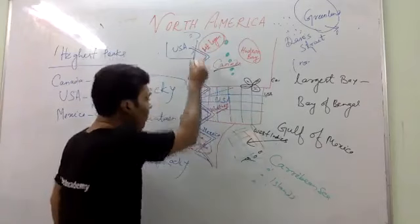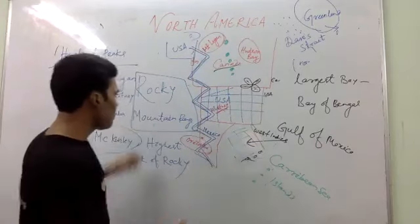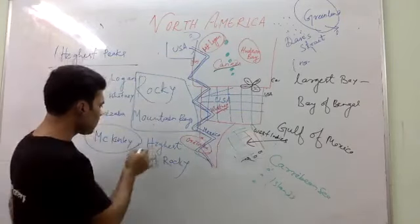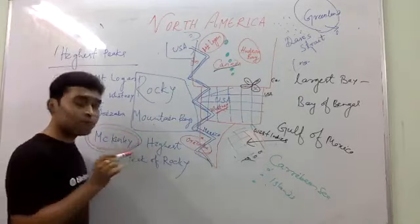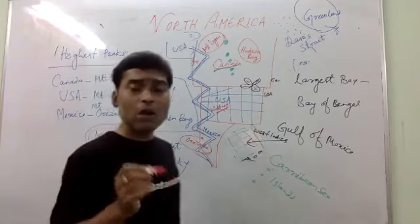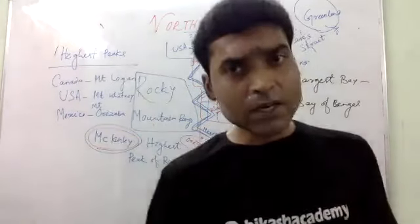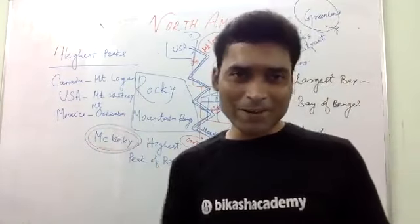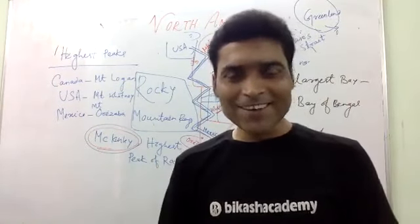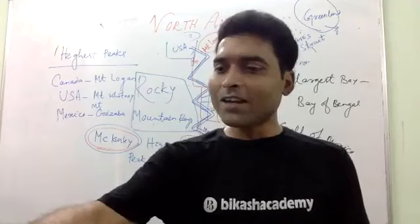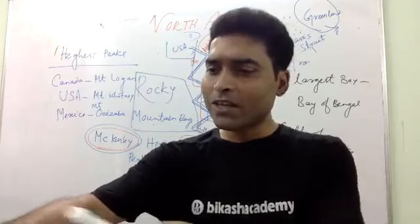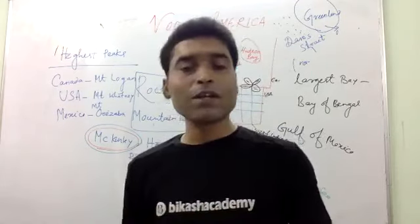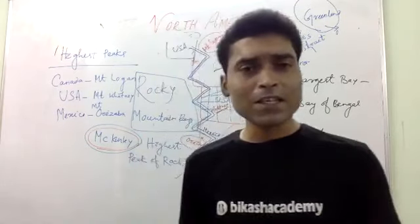We will also talk about the hill ranges of Canada and USA. Here you will find the McKenzie range, also called the Brooks range. There are many ranges in this area.